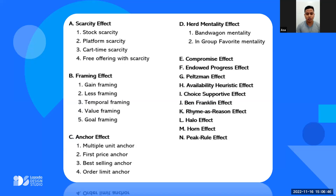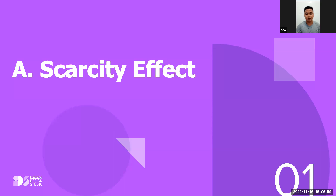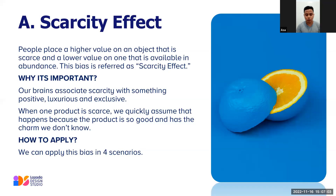Okay, so you can see our learning points — we have A, B, C until N. Let's start with the first one: the Scarcity Effect. Before we start, I want to ensure you already understand cognitive bias. Cognitive bias is a systematic error in thinking that occurs when people are processing and interpreting information in the world around them.